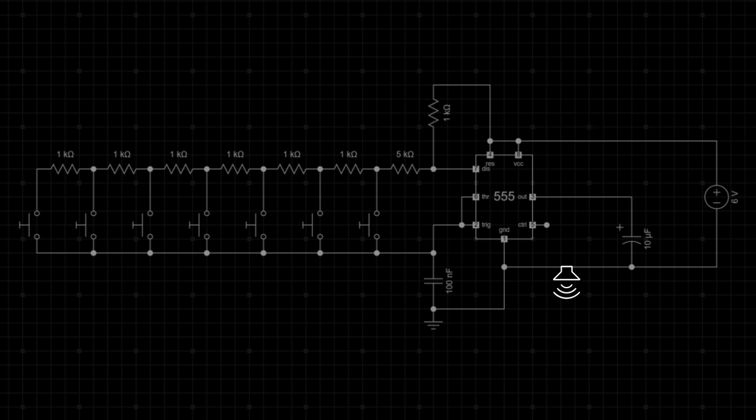The 555 timer generates a continuous square wave signal at its output, or pin 3. The frequency of this signal depends on the resistor capacitor network.